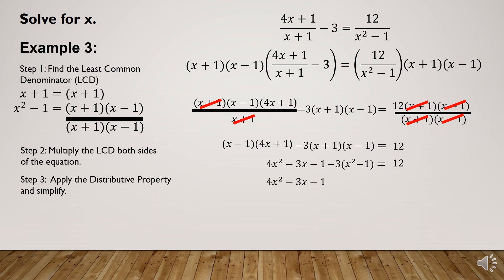We copy 4x² - 3x - 1 and distribute -3 into (x² - 1) to get -3x² + 3, so the equation becomes 4x² - 3x - 1 - 3x² + 3 = 12. Combining like terms on the left side, we obtain x² - 3x + 2 = 12.